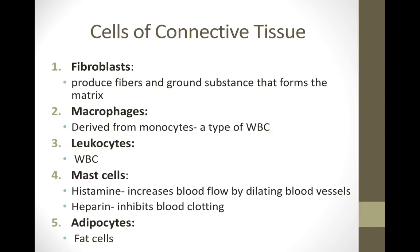Let's look at the cells that can be present in connective tissues. Some are generic and found in the majority of connective tissues, while others are specific to the tissue type. Fibroblasts are cells that produce protein fibers forming the extracellular matrix. Macrophages are a specific kind of white blood cell derived from monocytes. Leukocytes is a generic term for white blood cells. Mast cells are part of the body's immunity and defense, and can produce histamine or heparin. Adipocytes are cells that carry out deposits of fat.